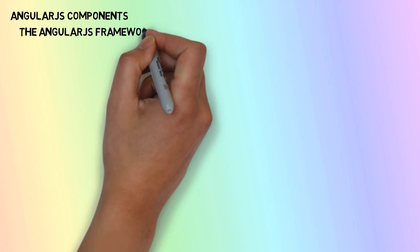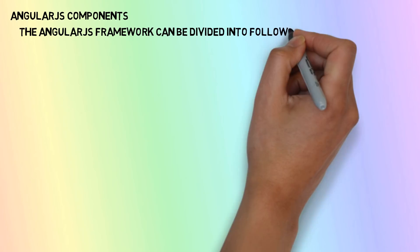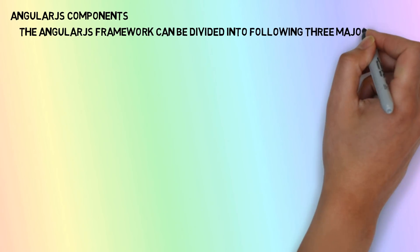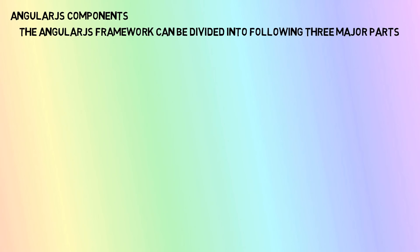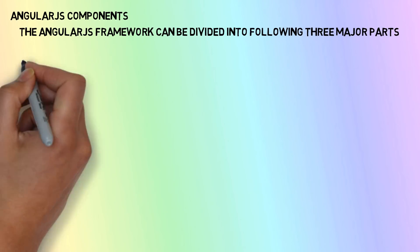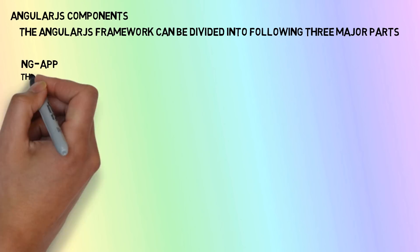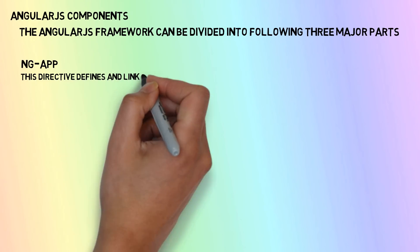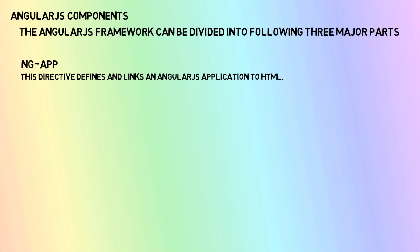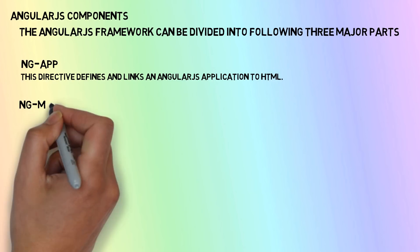In the next slide we will discuss AngularJS components. As we discussed in directives, the three major components of AngularJS are ng-app, ng-model, and ng-bind. ng-app is the main built-in directive which links the application to an HTML element.